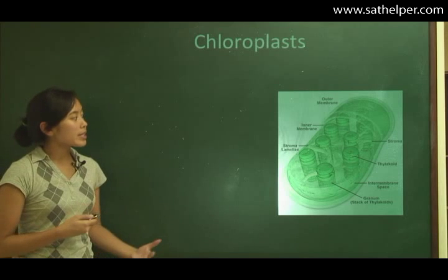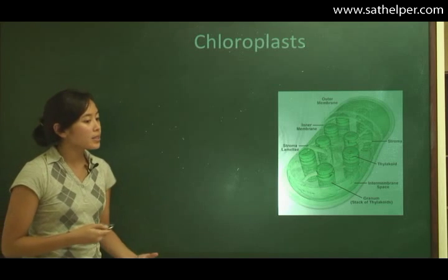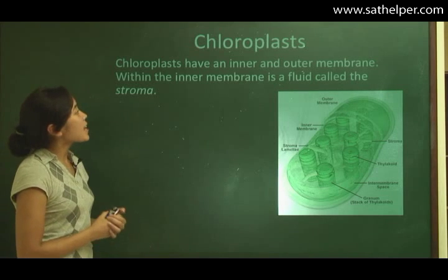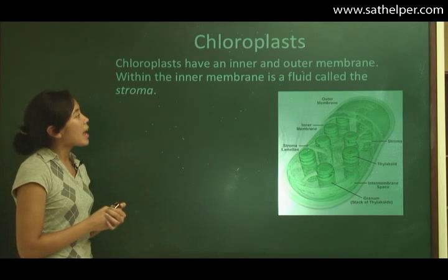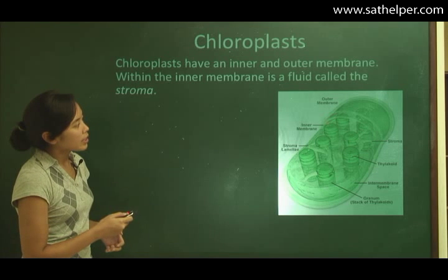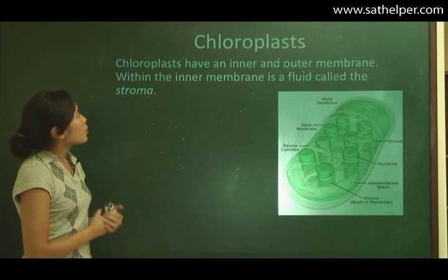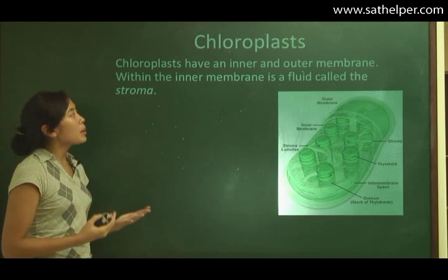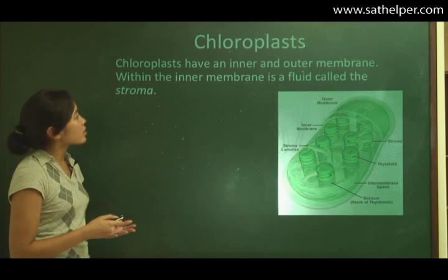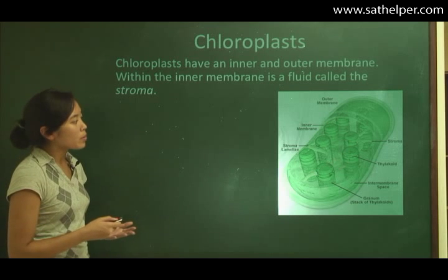This is the chloroplast. Chloroplasts have an inner and outer membrane — inner membrane, outer membrane. Within the inner membrane is a fluid called the stroma.